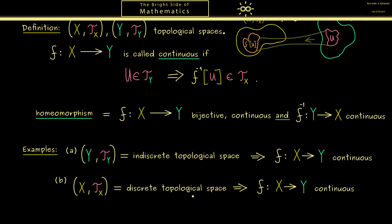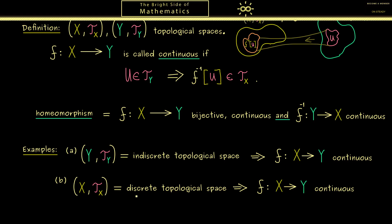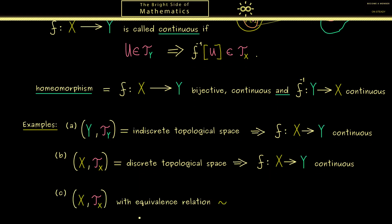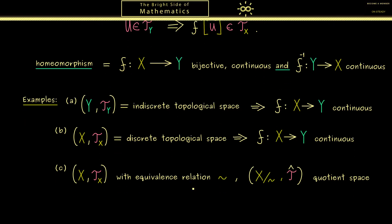Then the last example I want to show you is also one we've already discussed. There we just take any topological space (X,Tx) and an equivalence relation tilde. Hence the topological space Y should be given by the quotient topology. So you already know we can form a new topological space and we simply call it the quotient space.